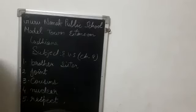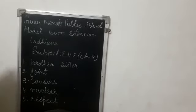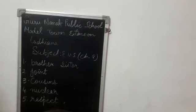Number 4, a small family is also called a dash family. Write nuclear at number 4. Number 5, children should always dash their parents. Write respect at number 5.